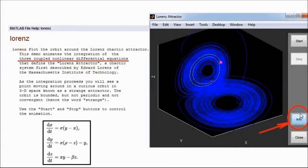Pressing the info button, we have the following information. So Lorenz is the plot of an orbit around the Lorenz chaotic attractor. This demo animates the integration of the three coupled nonlinear differential equations that define the Lorenz attractor, a chaotic system which was first described by Edward Lorenz of MIT.